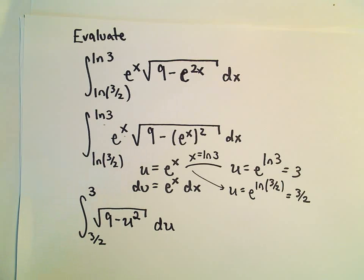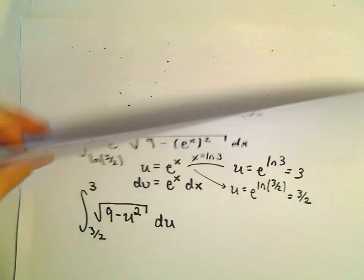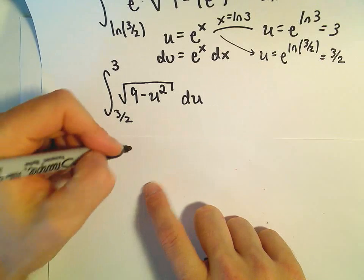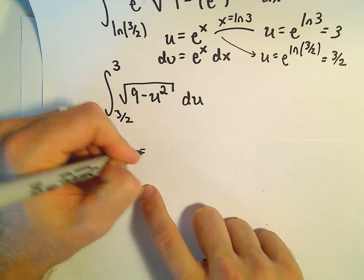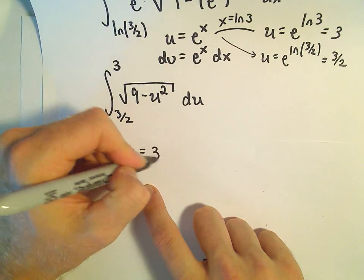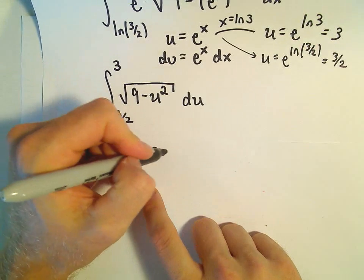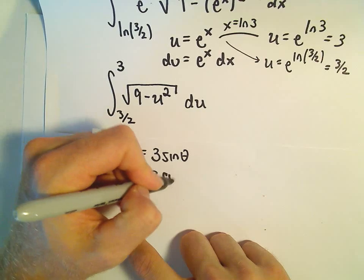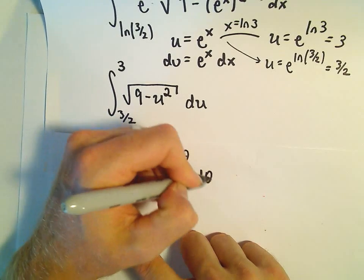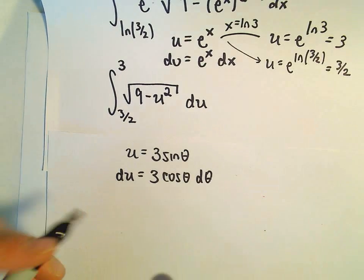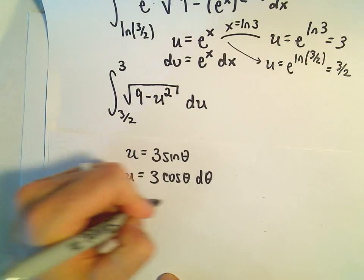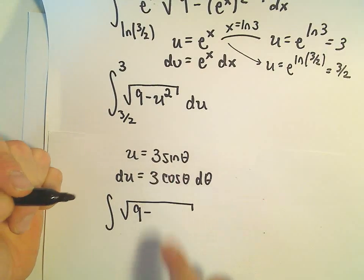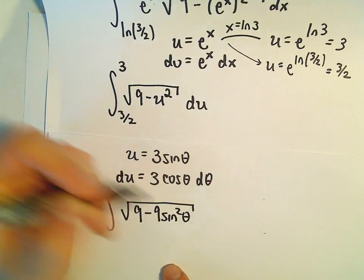Now, we just need to do our trig substitution. As far as a trig sub goes, this is not too terrible. Here, we're going to let u equal, so we take the square root of the number, which is 3, and in this case, we're going to use sine theta. So du will be 3 cosine theta d theta. We would have the square root of 9 minus u squared, which is going to be 9 sine squared theta.